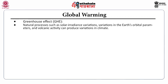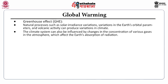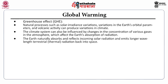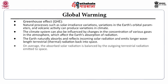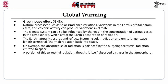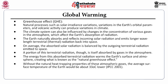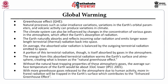Natural processes such as solar irradiance variations, changes in Earth's orbital parameters, and volcanic activity can produce variations in climate. The climate system can also be influenced by changes in the concentration of various gases in the atmosphere which affect the Earth's absorption of radiation. On average, the Earth naturally absorbs incoming solar radiation and emits longer wavelength terrestrial radiation back into space. A portion of this terrestrial radiation is absorbed by gases in the atmosphere, and the energy from this absorbed terrestrial radiation warms the Earth's surface and atmosphere, creating the natural greenhouse effect. With more greenhouse gases released due to human activity, more infrared radiation will be trapped, contributing to an enhanced greenhouse effect.